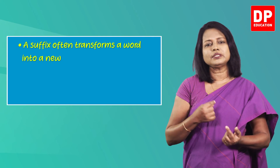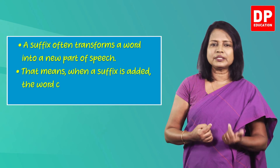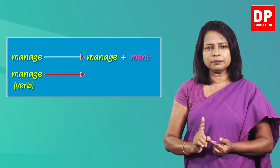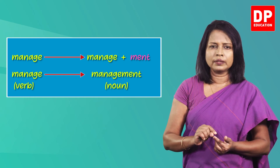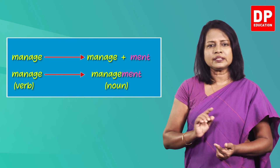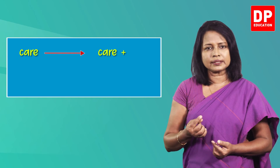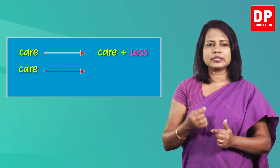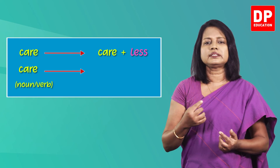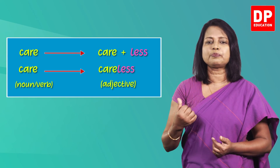Now that you are familiar with prefixes, let's learn about suffixes. As we learnt at the beginning of this lesson, suffixes are placed after the root word. A suffix often transforms a word into a new part of speech — that means when a suffix is added, the word class of the root word changes. For example, 'manage', which is a verb, is changed into 'management', which is a noun, when the suffix '-ment' is added. In another example, the suffix '-less' is added to the root word 'care', changing it from a noun or verb into the adjective 'careless'.